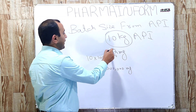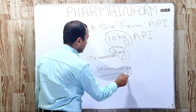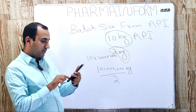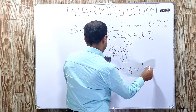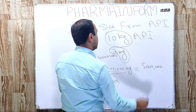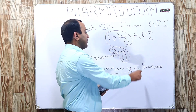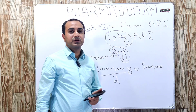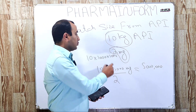As we know that each tablet contains 2 milligrams, so we divide it by 2. By dividing by 2, the answer will be 5,000,000 — meaning we can manufacture 50 lakh tablets from 10 kg of active pharmaceutical ingredient if each tablet contains 2 milligrams.